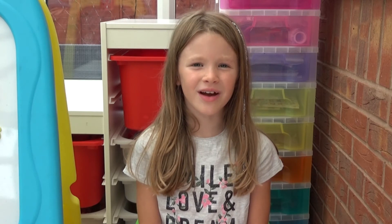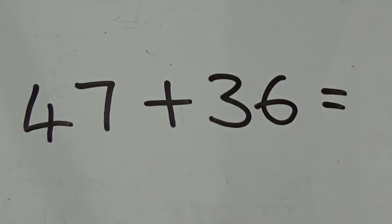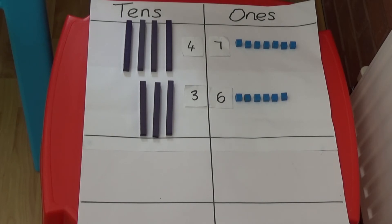This time we're going to look at what happens when the ones add to ten or more. I'm going to use column method to add together 47 and 36. I've made 47 using four tens and seven ones. And underneath I've made 36 using three tens and six ones.